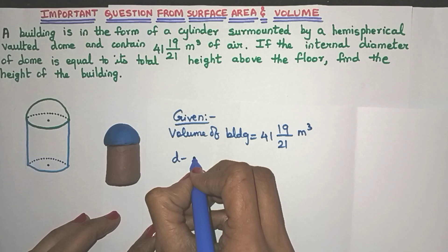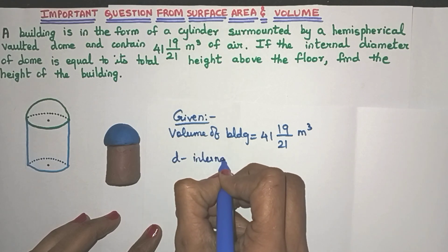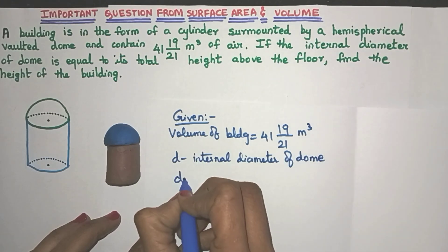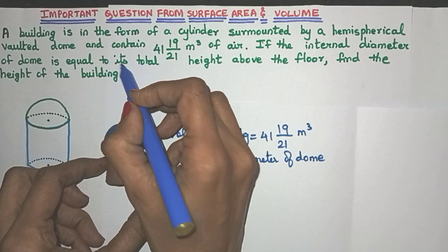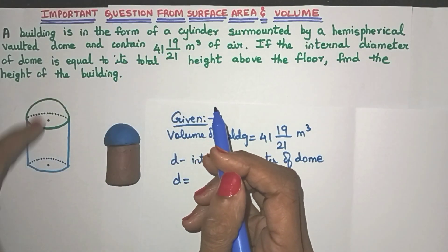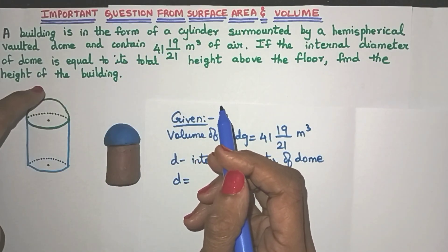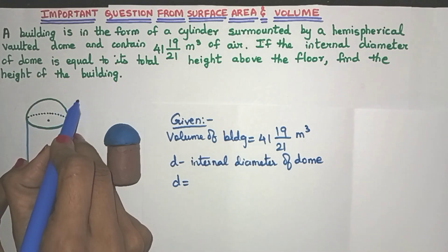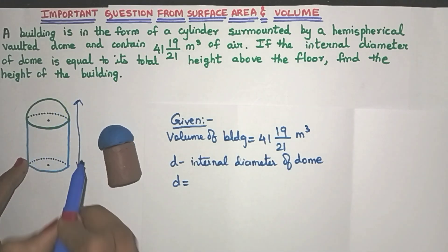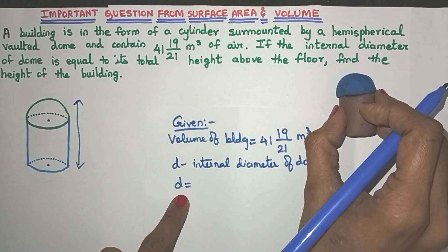So let's take D as the internal diameter of the dome. Now that is equal to its, its means the dome's, the dome's total height above the floor. So here is the dome. So its height above the floor means they are talking about this height, friends. See, that should be equal to the internal diameter.